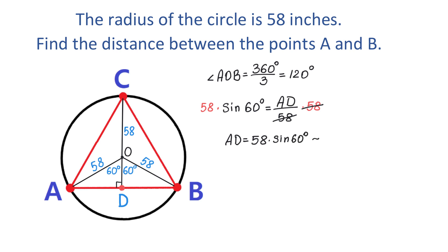If we use a calculator, then we will get that AD is approximately 50.2 inches. Now once we know the distance from A to D, we can find the distance from A to B by multiplying 50.2 by 2.